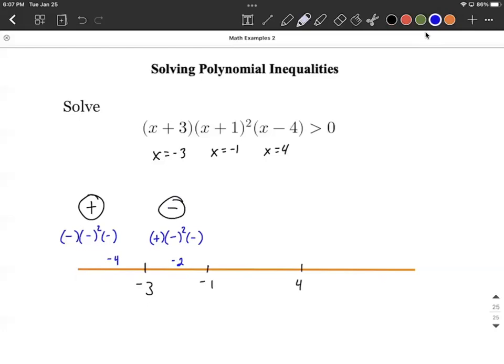Next, anything between negative one and positive four, we just repeat the process. I like plugging in zero because that makes life fairly easy as far as doing computations. So for each of the x's, we have zero plus three makes positive, zero plus one makes positive, it gets squared, and then zero minus four is a negative. So in this case, we have three positives and one negative. Overall is going to be negative.